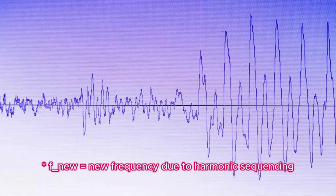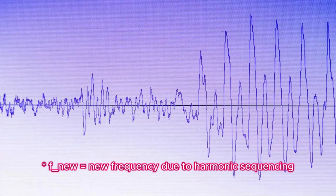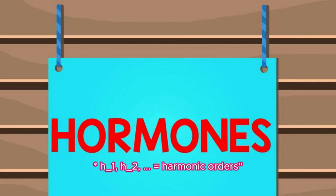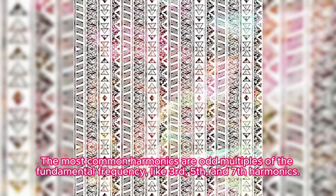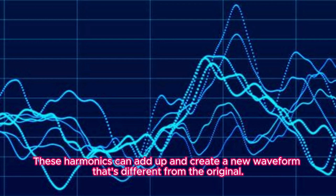f_new = new frequency due to harmonic sequencing h1 ± h2, where h1, h2 are harmonic orders. The most common harmonics are odd multiples of the fundamental frequency like 3rd, 5th, and 7th harmonics. These harmonics can add up and create a new waveform that's different from the original.